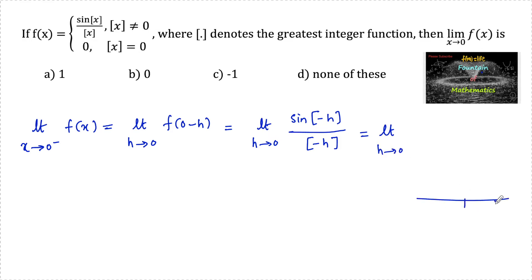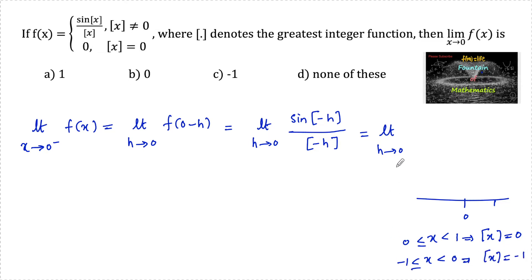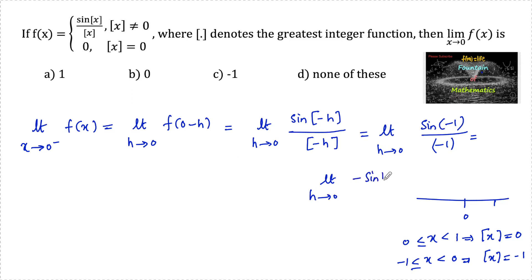Since for x lying between −1 and 0, [x] equals −1, so [−h] equals −1 for small h greater than 0. Therefore sin of [−h] equals sin of −1, and [−h] equals −1. This gives us minus limit h tends to 0 of sin(−1) upon (−1), which simplifies to sin(1).